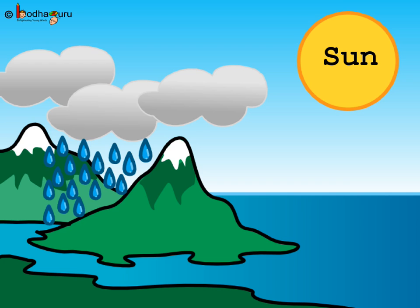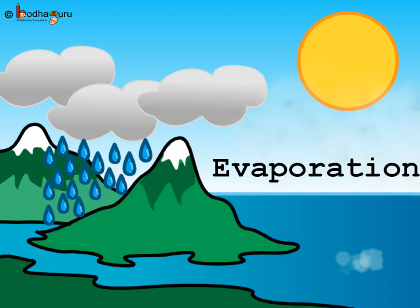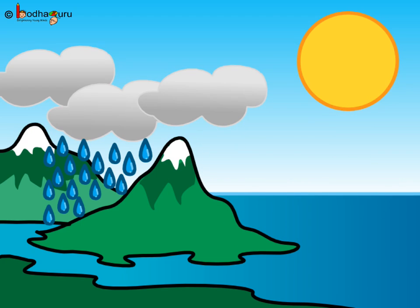Just like water vapor from boiling water changes into droplets of water, the same thing happens to water evaporated from various water bodies. This water vapor rises up into the sky, meets the cool air, then becomes cold and changes into water droplets. The water droplets keep collecting to form clouds.